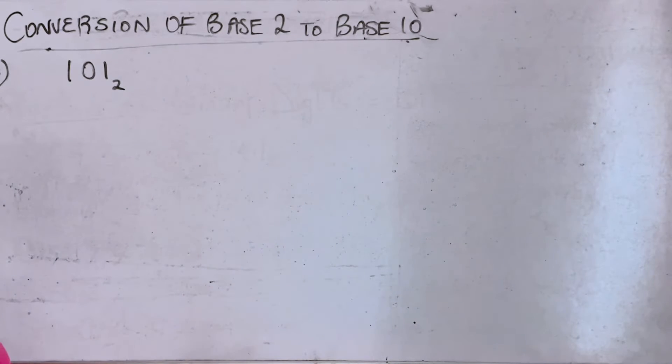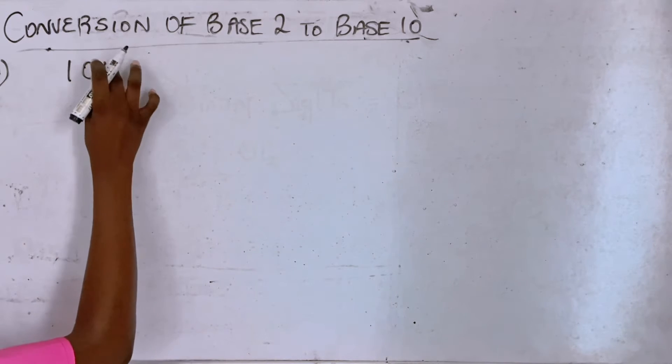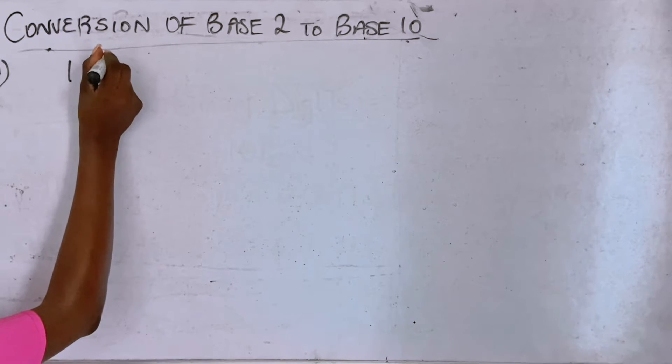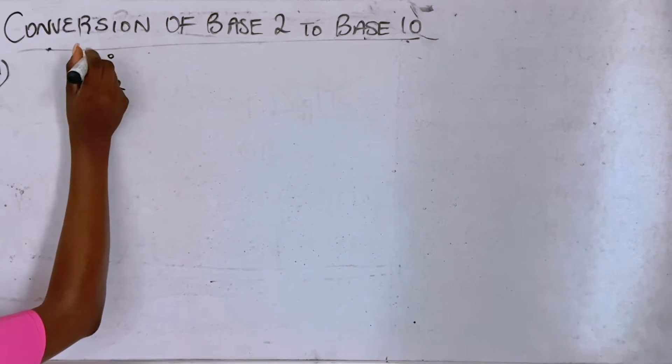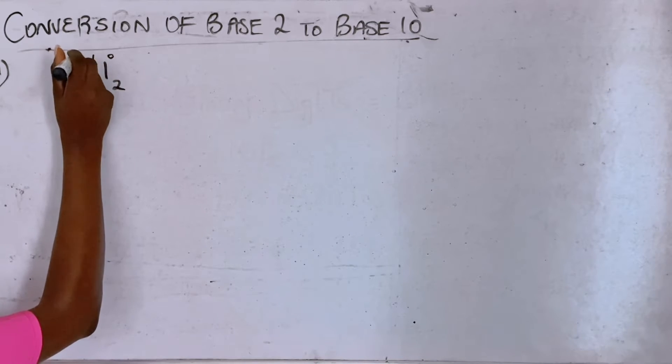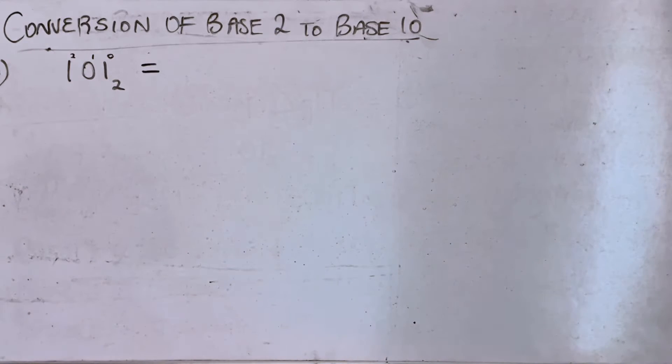So I want us to take a look at something. Whenever we're asked to convert a binary number to decimal number, that is base 2 to base 10, you can do it this way. From the first, or you could call it the last, just put zero, one, two. This helps remind you on the power you're supposed to use.